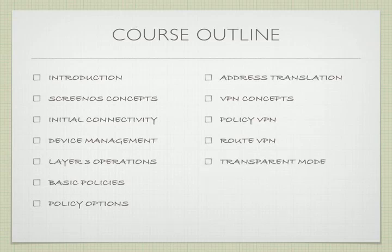The next module is on transparent mode. Transparent mode allows the ScreenOS device to operate at layer 2. This is useful primarily for inserting a firewall inline with an existing IP network — the firewall only gets an IP address for management purposes. It sees the zones and traffic all as a switch at layer 2. This is a convenient method to insert firewall protection and firewall rules into, say, a public server segment where you don't want to do any NAT, but you do want the protection of the firewall device.